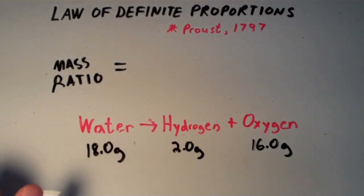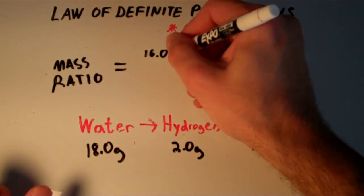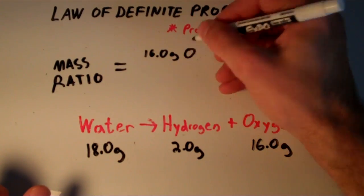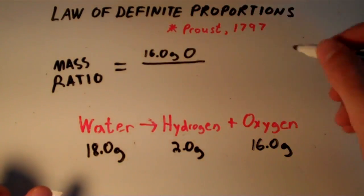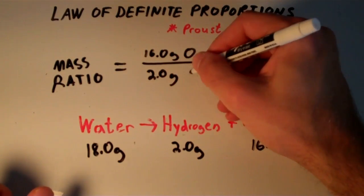All we're going to do is we're just going to take the mass of oxygen and divide that by the mass of hydrogen. So it says we have 16.0 grams of oxygen and we have 2.0 grams of hydrogen.